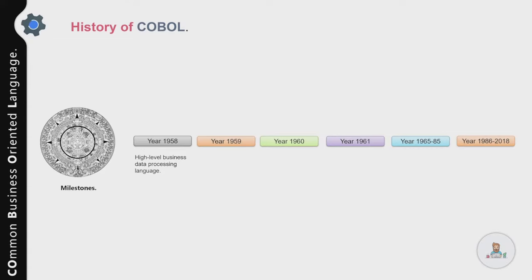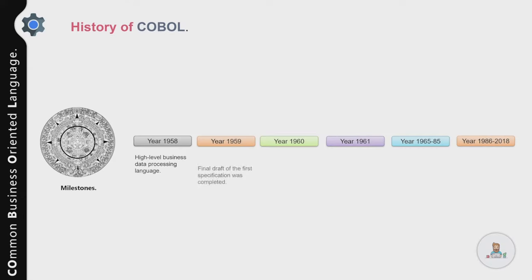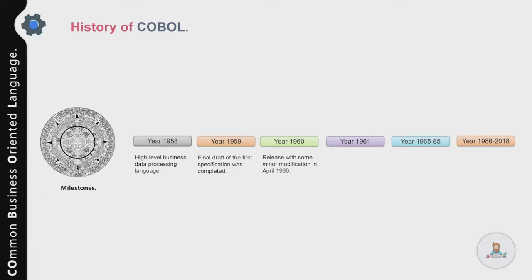The conference led to the formation of a team called CODASYL — Conference on Data Systems Languages — with representatives from civil and government organizations, academics, computer manufacturers, and software enthusiasts. As a result, COBOL was developed in September 1959, released with minor modifications in April 1960, and COBOL 61 was published in May 1961 with minor revisions, providing the foundation for later versions.